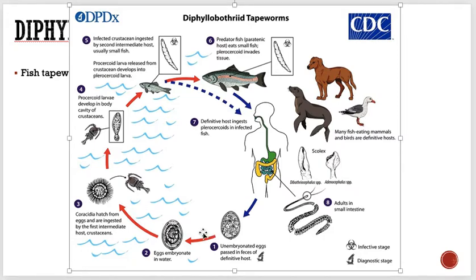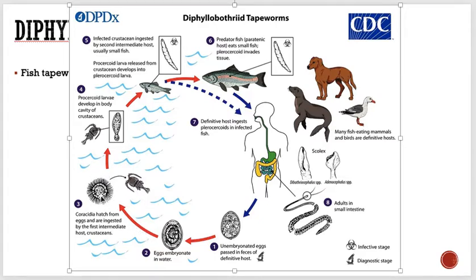The eggs embryonate in water. In water, it takes around 10 to 15 days for them to mature. When they mature, they become ciliated — you can see a lot of cilia on them. They are then ingested by their first intermediate host, which are cyclops.